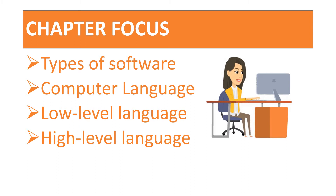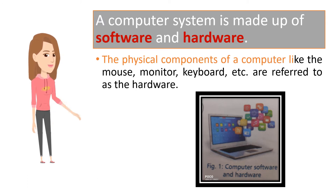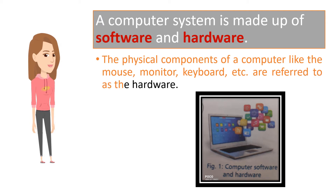A computer system is made up of software and hardware. The physical components of a computer like the mouse, monitor, keyboard, etc. are referred to as the hardware.